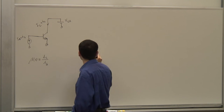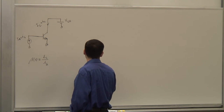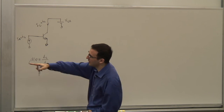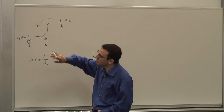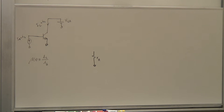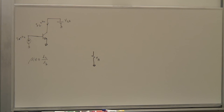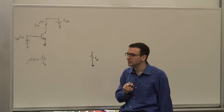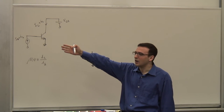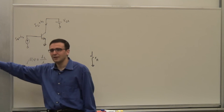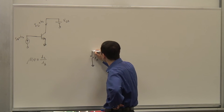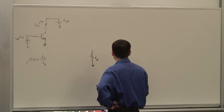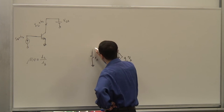I know I care about only the small signal quantities, so I might as well go directly to the small signal model and calculate the ratio by applying it. I can start linearizing the system from the beginning, as opposed to going through the nonlinear equation and then linearizing. So let's draw the small signal model for the transistor.